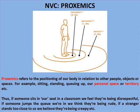NVC Proxemics. Proxemics refers to the positioning of our body in relation to other people, objects or spaces — for example, sitting, standing, queuing, our personal space or territory. Thus, if someone sits in our seat in a classroom, we feel they're being disrespectful; if someone jumps the queue we're in, we think they're being rude; and if a stranger stands too close to us, we believe they're being very creepy.